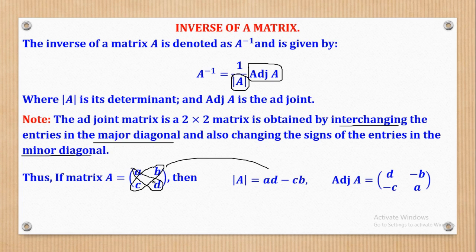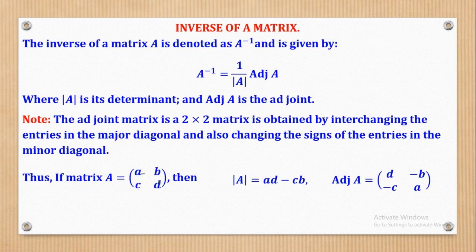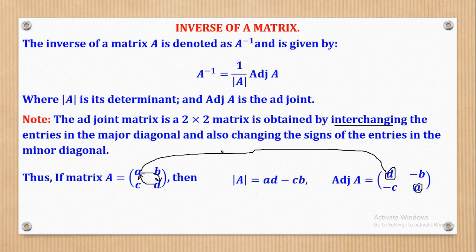For the adjoint, we interchange the entries in the major diagonal. This is the major diagonal — here there is A and here there is D. Interchanging means this A will replace this D and this D will replace this A. So where there was A, we have now put D, and where there was D, we have now put A. That's what we mean by interchanging.